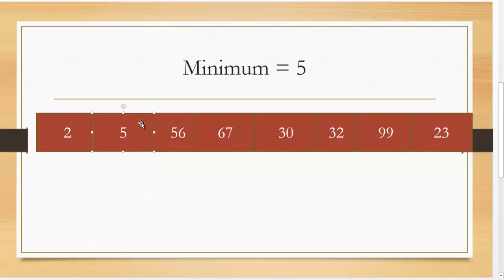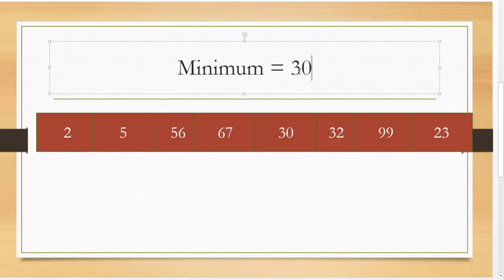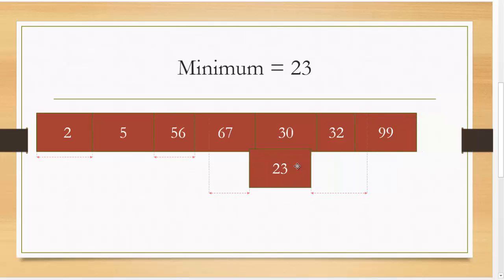And now you see those aren't ordered. So now I start with the third position. So 56. So my minimum value right now is 56. Is 67 smaller than it? No. Is 30? Yes. Is 32 smaller than 30? No. Is 99 smaller than 30? No. Is 23 smaller than 30? Yes. 23 is. And now I'm at the end of the array. So I'm going to swap 23 with 56.